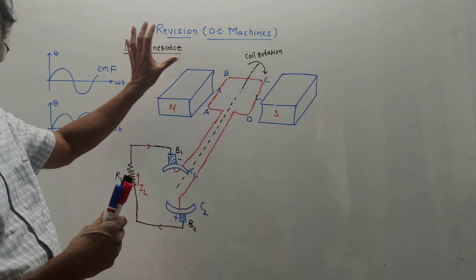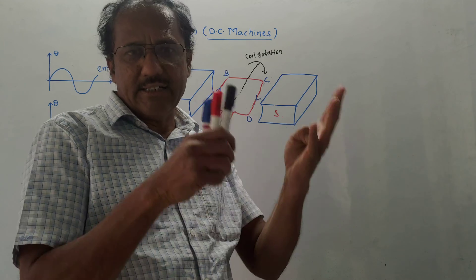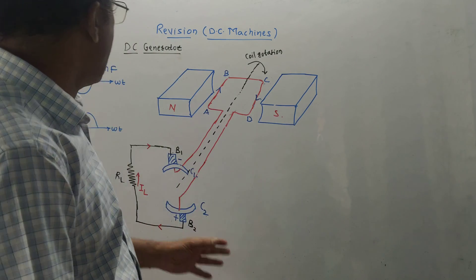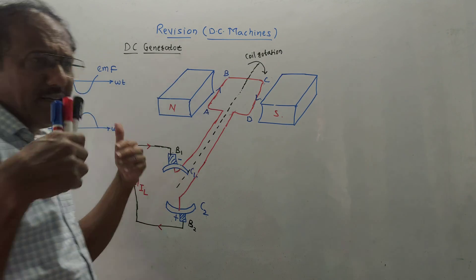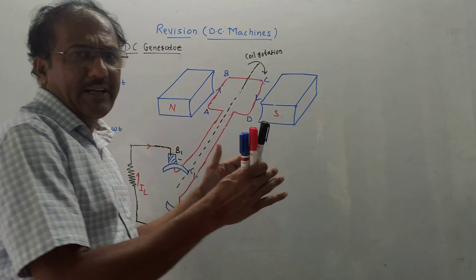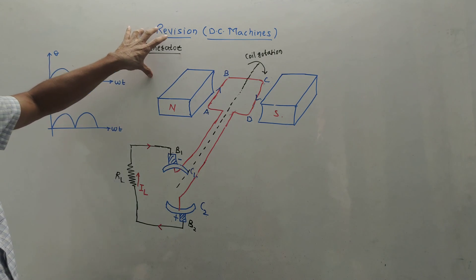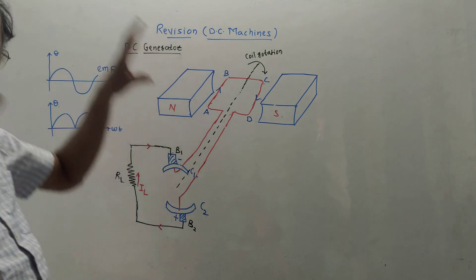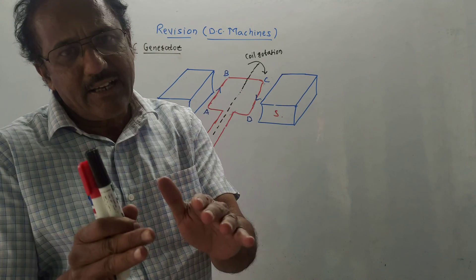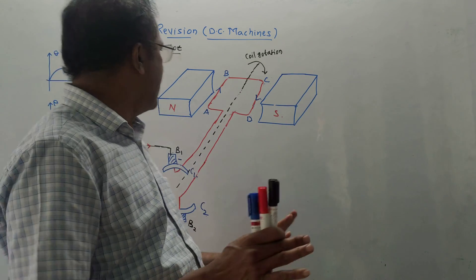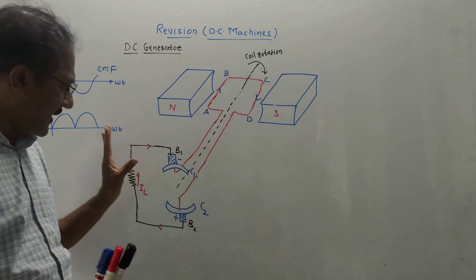DC machines basically consist of two major parts: one is DC generator and second is DC motors. This is the block diagram of DC generator. I will tell you the simple tricks to remember the diagram and how to correlate the things. First we will talk about the DC generator.